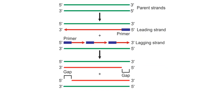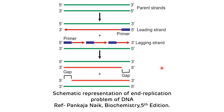This picture shows the end replication problem which occurs in eukaryotes. DNA polymerase cannot synthesize the extreme 5' end of the new strand because polymerase acts only in the 5' to 3' direction. So, the newly synthesized strands would have an incomplete 5' end after the removal of the RNA primer. Once the RNA primer is removed, there will be an incomplete 5' end in the newly synthesized strand, making it shorter compared to the complete strand. There is a generation of a gap at the 5' end, so the strand will be incomplete.